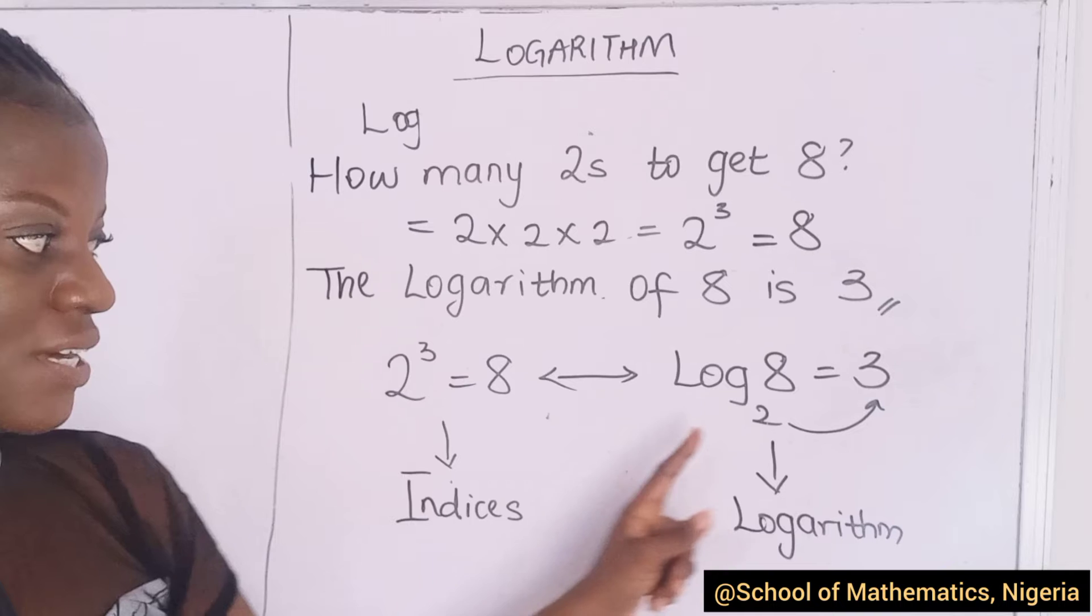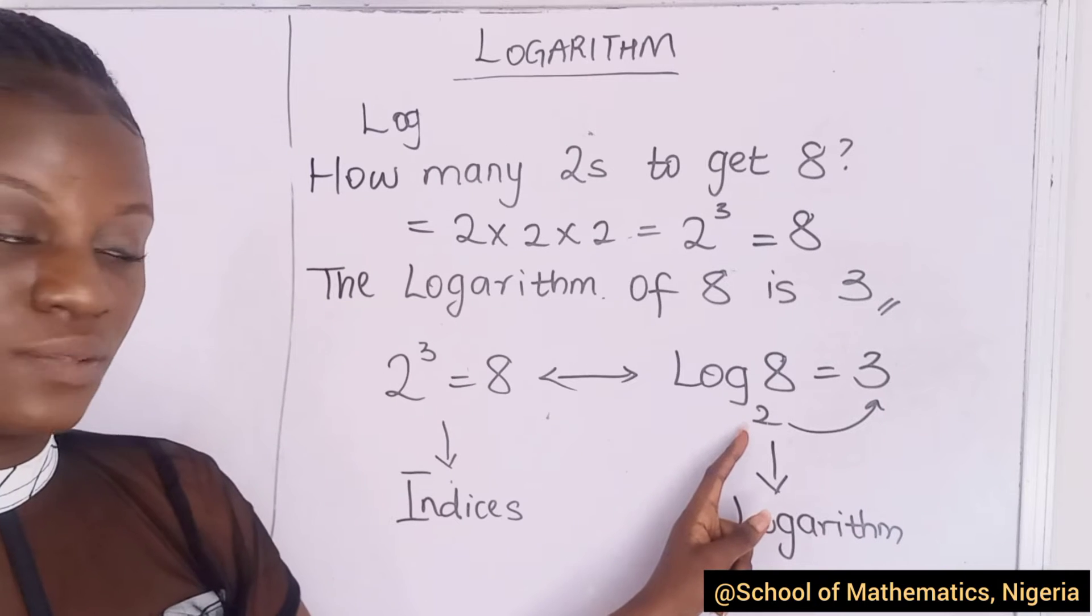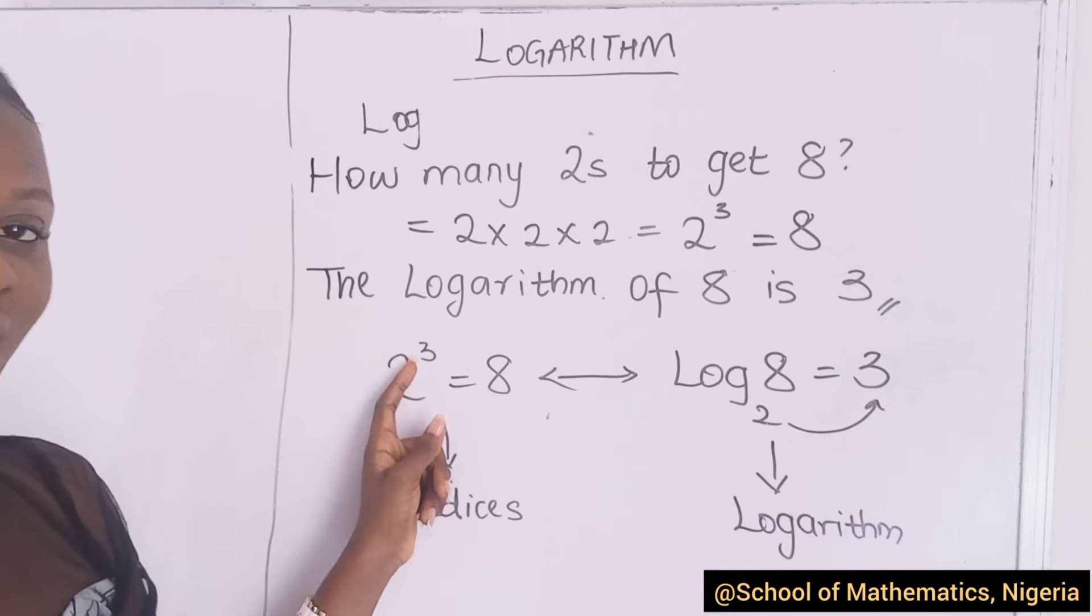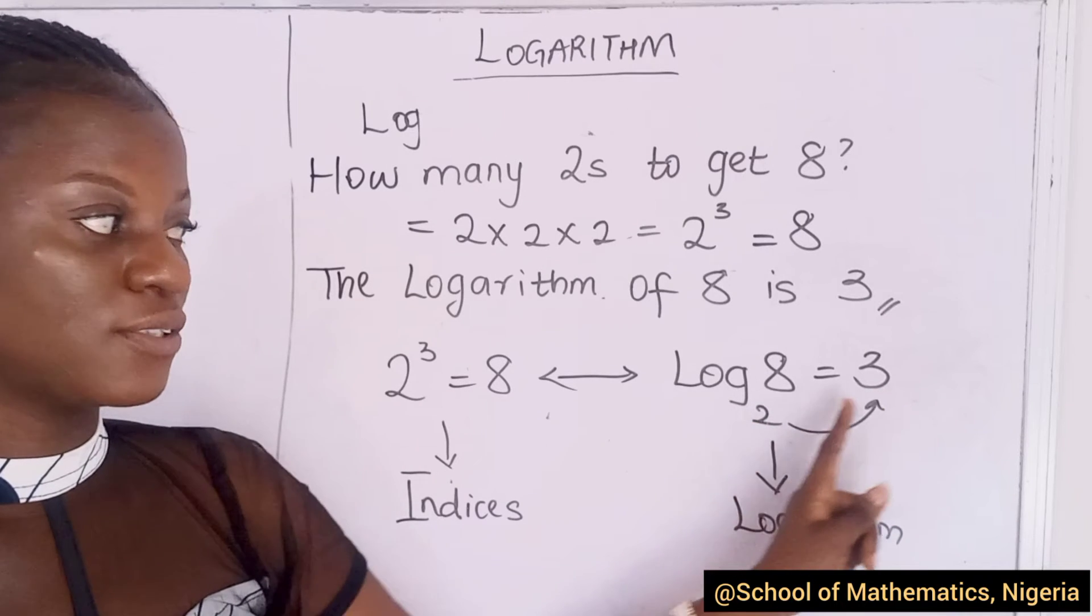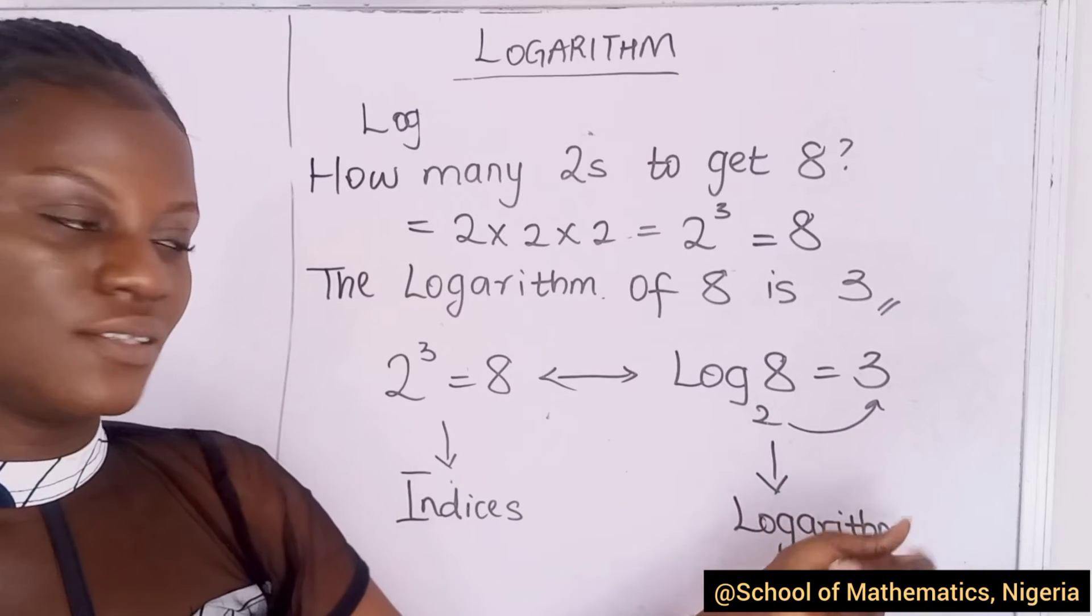This is called your base. Two is your base. That's the same thing as this place. Two is the base. And then, three is your exponent or your power. That's the same thing here. You had to multiply two three times to get eight.